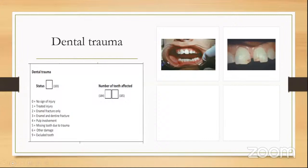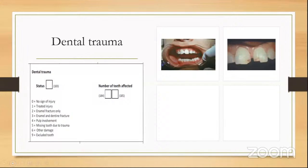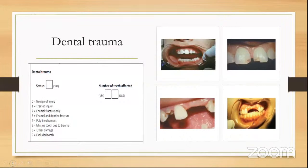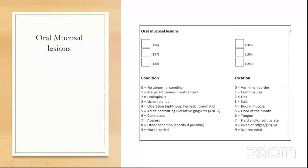Dental trauma is also new in 2013. Score two is an enamel-only fracture; score three involves enamel and dentin fracture; score four involves pulp; score five is a missing tooth due to trauma. Score one is assigned to an anterior fracture that has been treated and restored, such as with composite. A box for the number of teeth affected is also included.